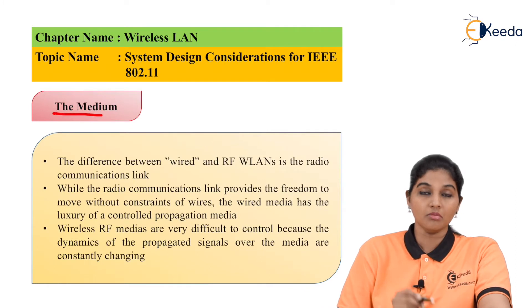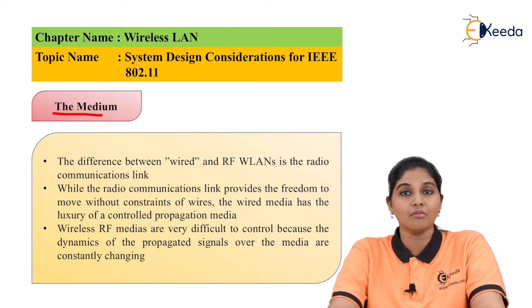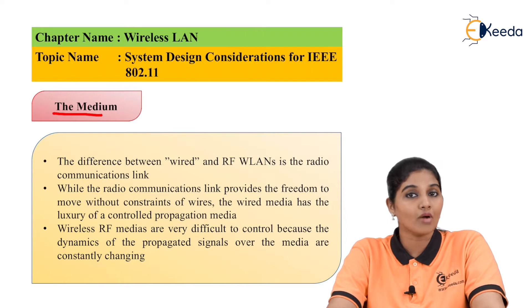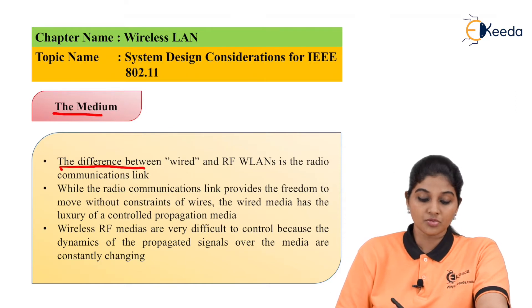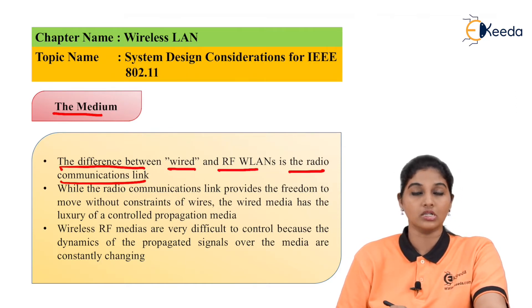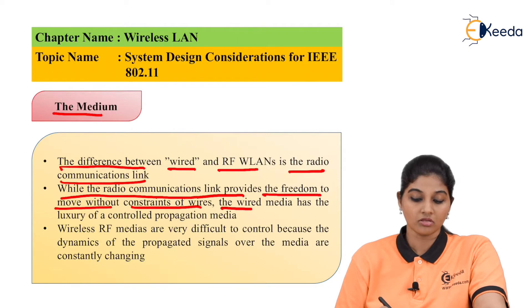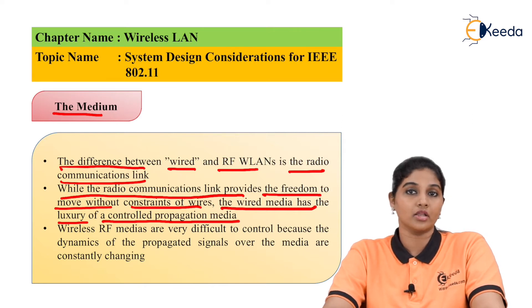The first design consideration is the medium. For any communication, a transmission medium is required. In wired networks — whether LAN, MAN, or PAN — wires are used, whereas in wireless networks, air is used as the medium. The difference between wired and RF wireless LAN is that a radio communication link provides freedom to move without the constraint of wires, while wired medium has the luxury of controlled propagation media.